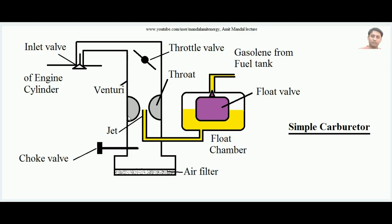This is the venturi — it is generally cylindrical in shape. The venturi contains the throat. The diameter of the venturi is larger, but at the throat the diameter is reduced. You can see that a very small, thin pipe comes from the float chamber and ultimately opens at the center of the throat. The opening of this jet is inside the throat region. This is the throttle valve — its job is that it can open and close accordingly.